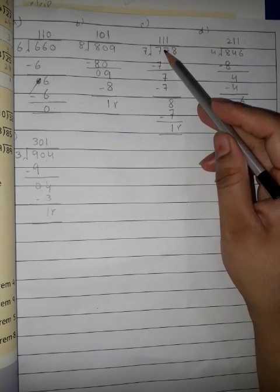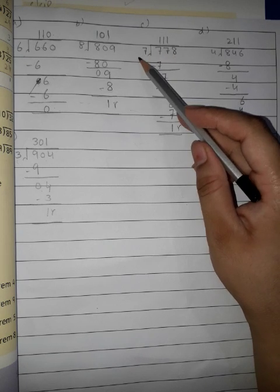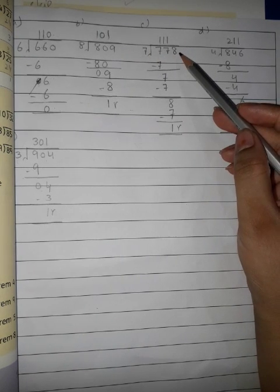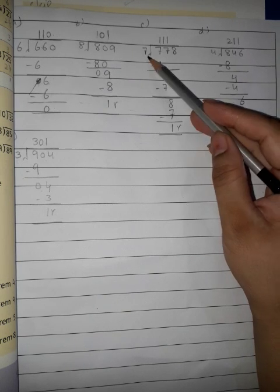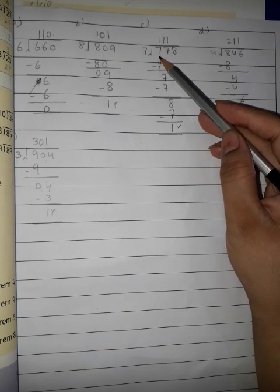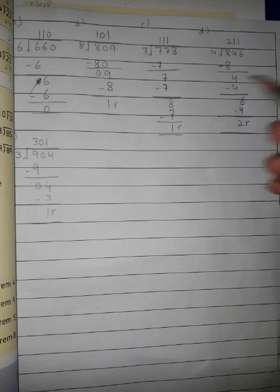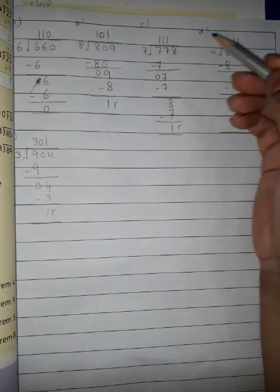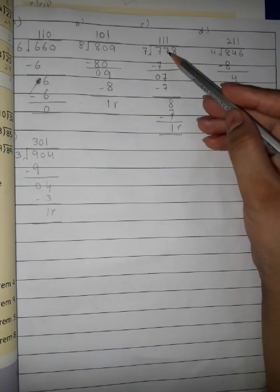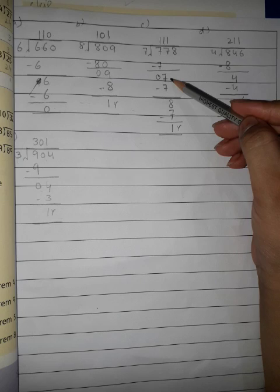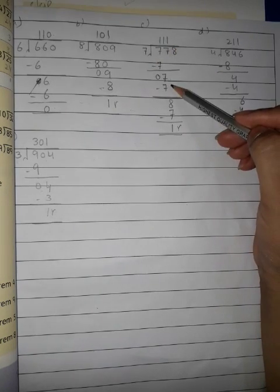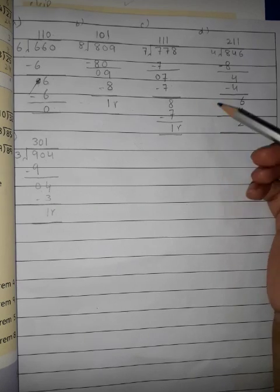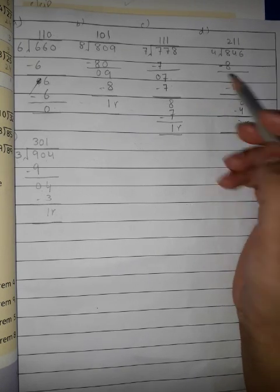Part C. 778 divided by 7. What do we have to do? We have to count seven's table. Seven ones are seven. First we have to solve hundreds. So we have to take seven ones are seven. We have to minus this. What will we get? Zero. What do we do? We will take the second amount, tens. What is seven? Now we have to do seven's table. Seven ones are seven. We have to minus seven. What do we get? Zero.